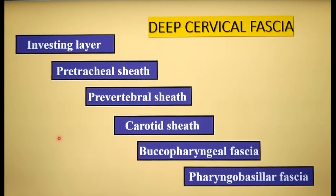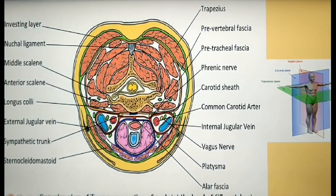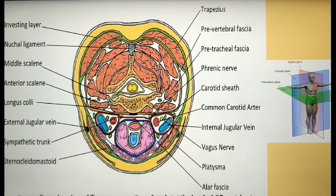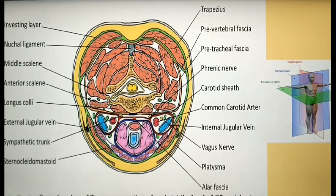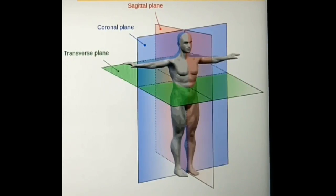The deep cervical fascia is organized into several layers, each having a role in supporting the neck structures. Before looking at the diagram, understand that any object or human body can be visualized in three different planes: the sagittal, coronal, and transverse planes.